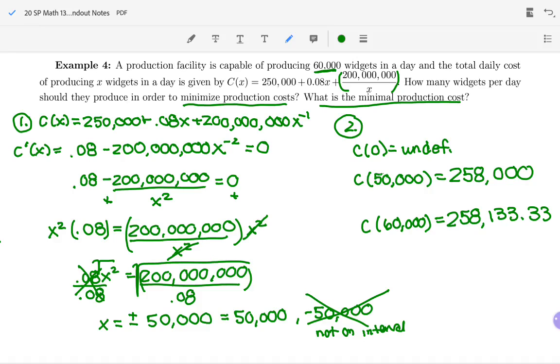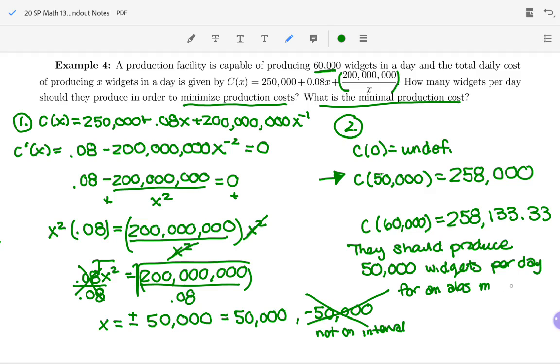So remember we want to minimize instead of maximize. We'd rather have $258,000 than $258,133. Our conclusion then is they should produce 50,000 widgets per day for an absolute min daily cost of $258,000.